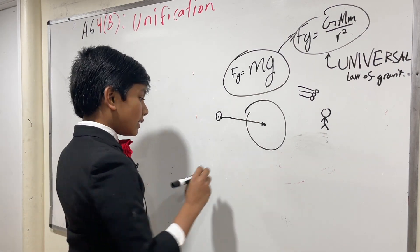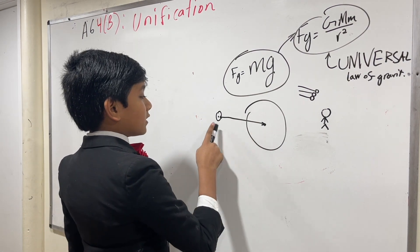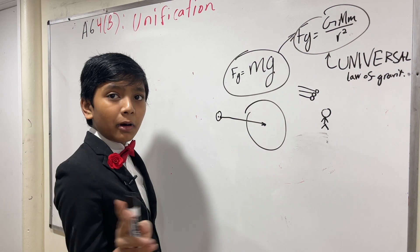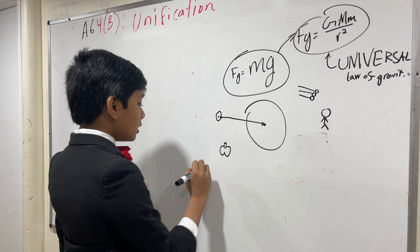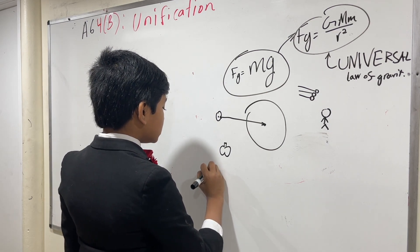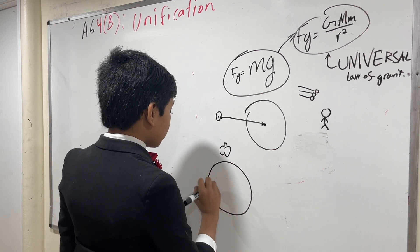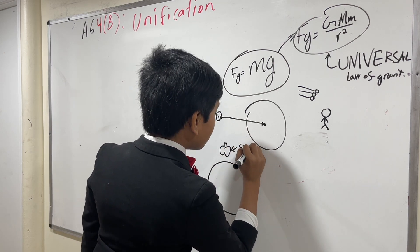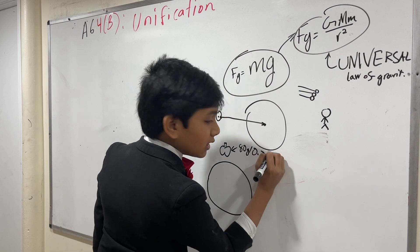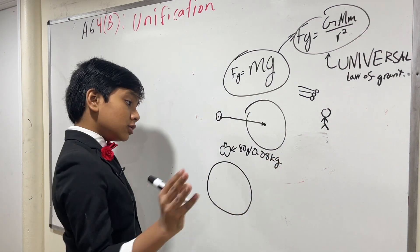So now, let's give an example of this attraction between the centers of two bodies with an apple. What is the apple's attraction to Earth? So, let's say this apple is 80 grams or 0.08 kilograms.